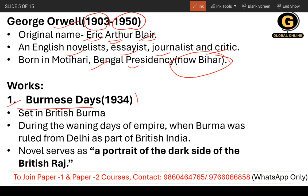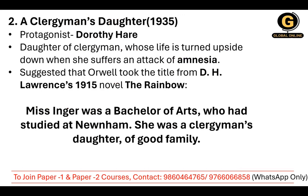The first work is Burmese Days, published in 1934. It was set in the British colonial period — during the waning days of empire when Burma was ruled from Delhi as part of British India. It was set in British Burma since the Britishers were ruling at that time. The novel serves as a portrait of the dark side of the British Raj.